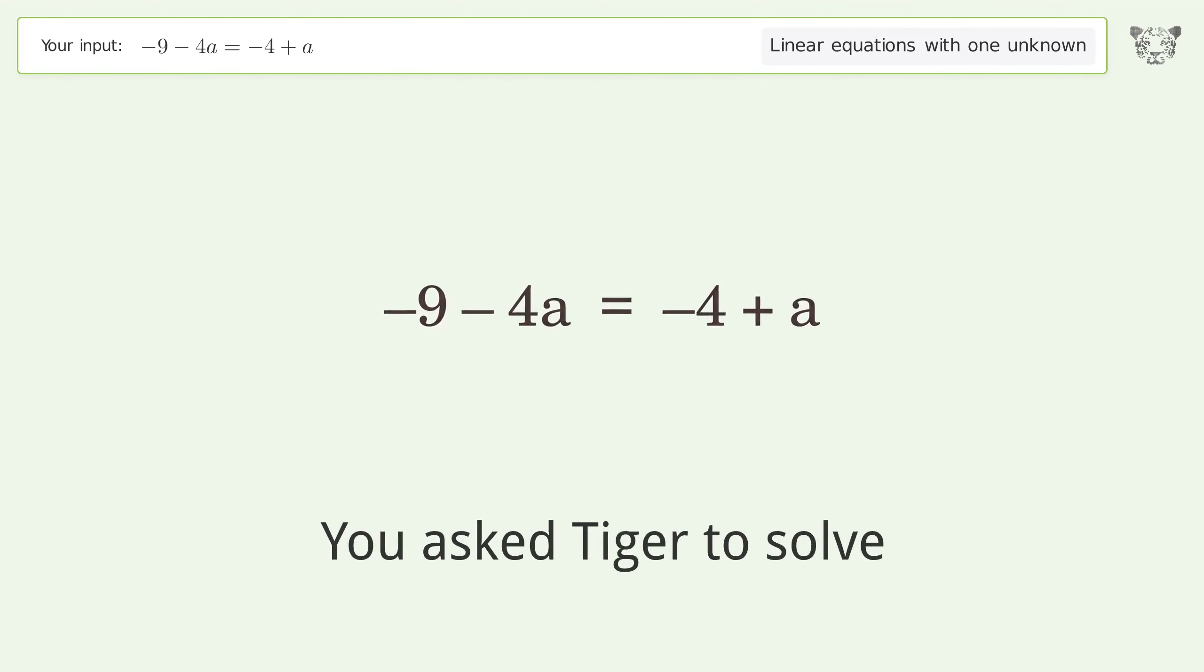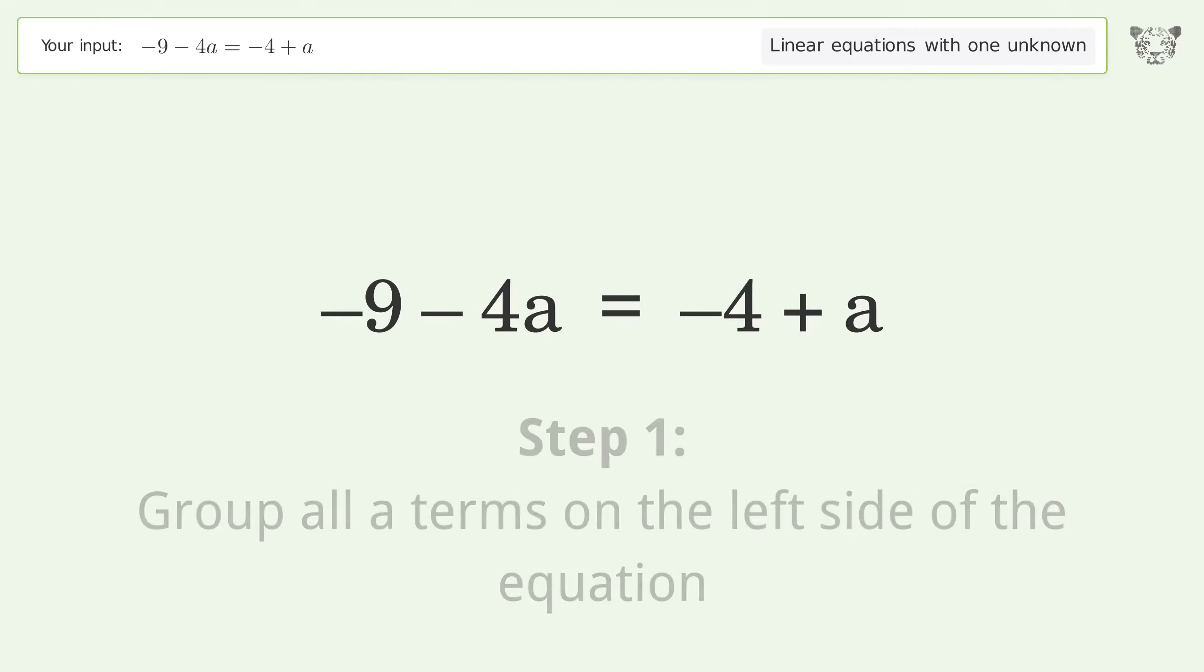You ask Tiger to solve this. This deals with linear equations with one unknown. The final result is a equals negative one. Let's solve it step by step. Group all a terms on the left side of the equation.